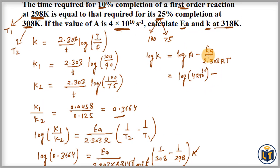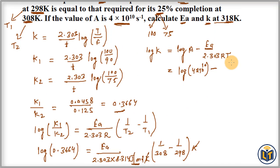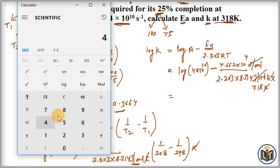Plugging in: Ea = 7.662 × 10⁴ J/mol (using joules since R = 8.314 J·mol⁻¹·K⁻¹), and T = 318 K. The denominator 2.303 × 8.314 × 318 = 6088.79. The log A value of 4 × 10¹⁰ equals 10.60.